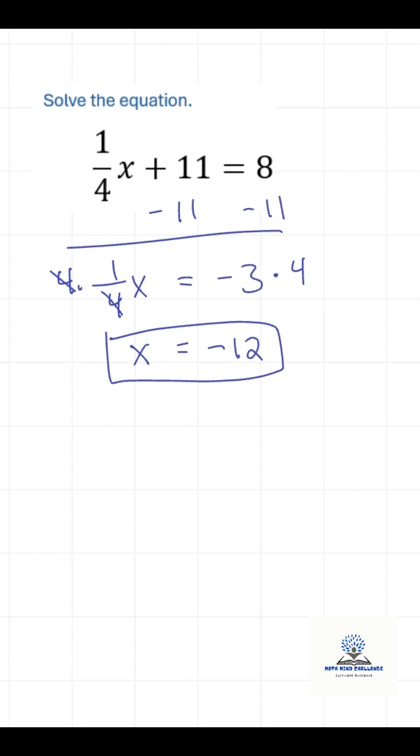It's a good idea to plug this in and make sure it works. Negative 12 times 1 fourth is the same thing as negative 12 divided by 4, which is negative 3 plus 11, which is 8, and 8 is equal to 8, so that checks out. So we did that right, which is good.